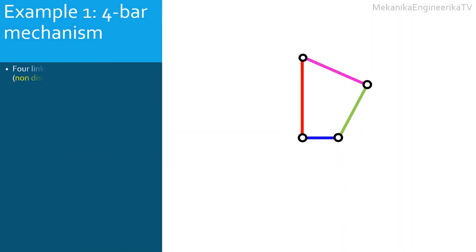For the first example, we consider the four-bar mechanism. This mechanism has four links, four bars. Thus, the mechanism has four possible inversions. As all links are similar — all links are bars — the inversions are similar. All inversions have one ground and three rotating bars. The inversions are not substantially distinct. However, changing the ground, or inverting the mechanism, can interfere with the range of motion. A rotating bar can, or cannot, make a full 360-degree rotation, depending on the inversion.